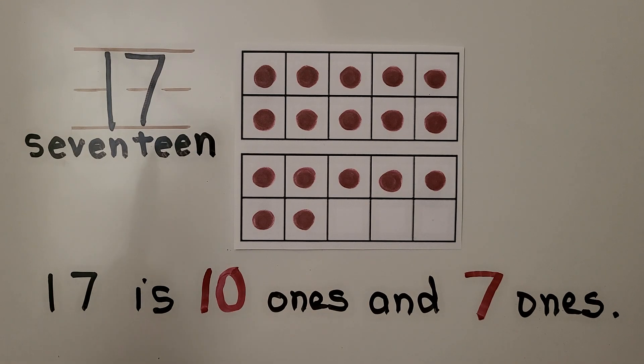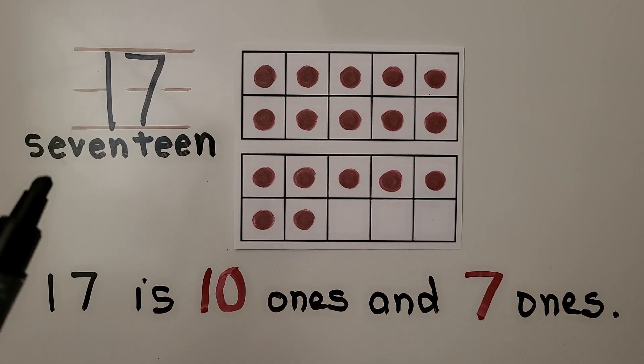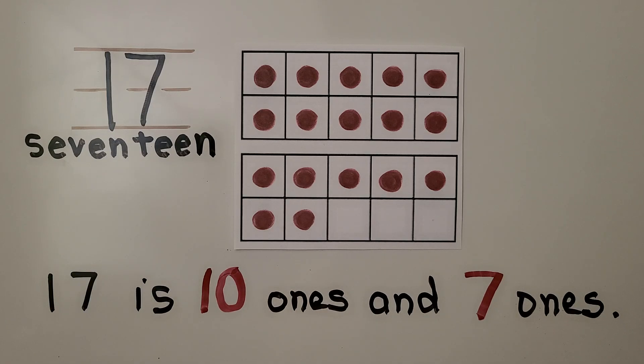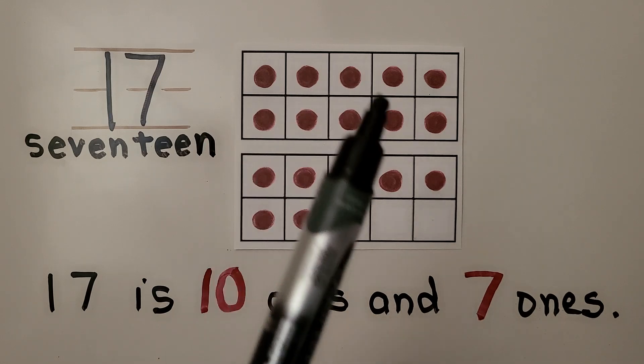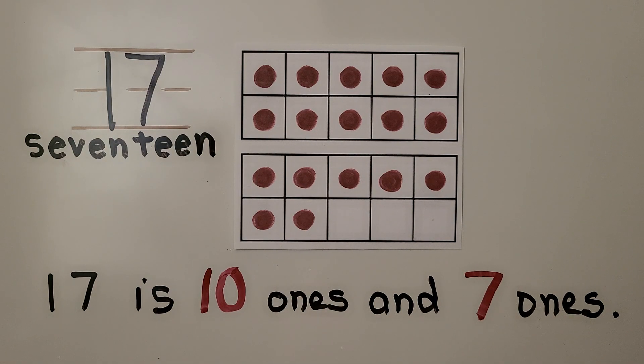This is the number 17. It's a 1 with a 7 next to it. This is the word 17. We can model 17 as a full 10 frame for 10 and 7 more. 17 is 10 ones and 7 ones. 17 is 1 more than 16.